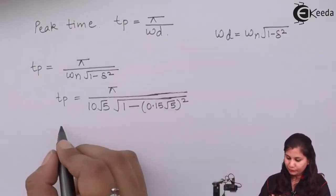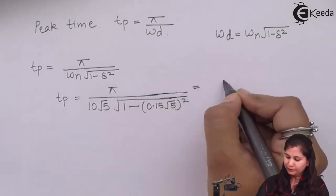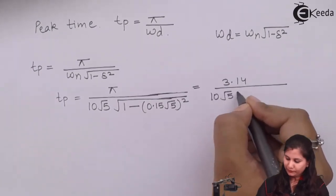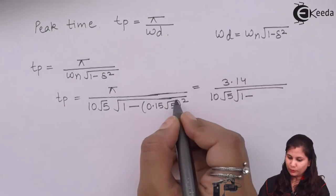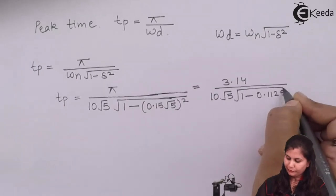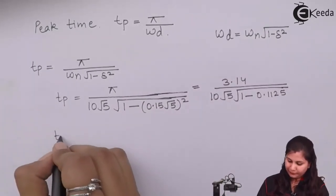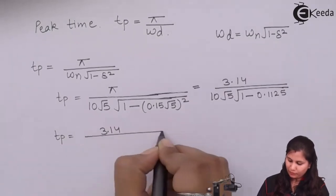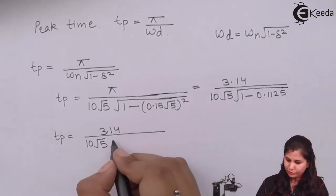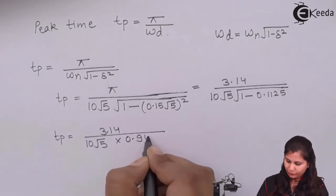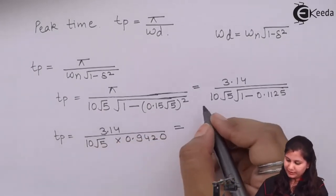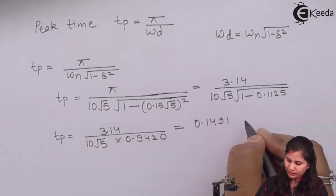Calculating: π is 3.14, and 1 minus (0.15√5)² equals 1 minus 0.1125, giving 0.8875, so the square root is approximately 0.9420. Therefore tp equals 3.14 upon (10√5 × 0.9420), and solving this we get the peak time as 0.1491 seconds.